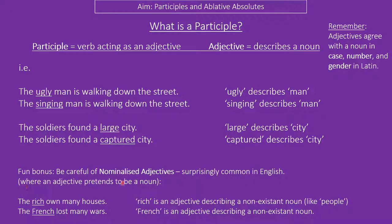We're also going to see some nominalised adjectives, where adjectives are pretending to be a noun. So, 'the rich own many houses' — rich is obviously an adjective, but we're treating it almost like it's a noun, like a nominative plural. 'The French lost many wars' — same way, we're treating it like a noun. They're describing a non-existent noun, like 'people'.